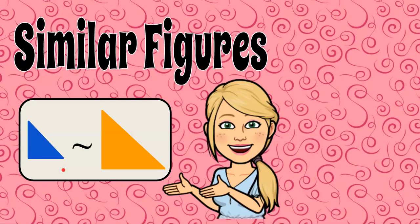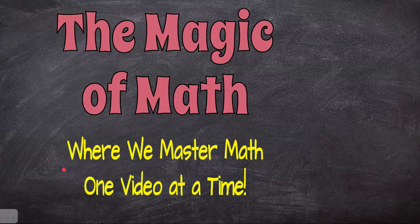There you have it. That's similar figures. Remember, similar figures have corresponding sides that are proportional and corresponding angles that are congruent. I hope you enjoyed our lesson today and that you'll come back and join me at The Magic of Math. Please subscribe to my channel and sign up to receive notifications for future videos, and I hope you'll continue on with this playlist. Have a great day!